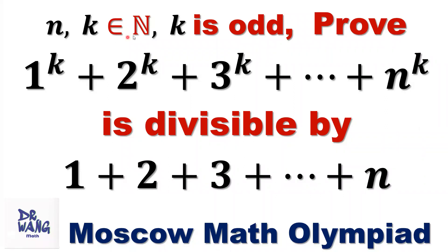n and k are positive integers, and k is an odd number. Prove that 1 to the power of k plus 2 to the power of k plus ... plus n to the power of k is divisible by 1 plus 2 plus ... plus n.